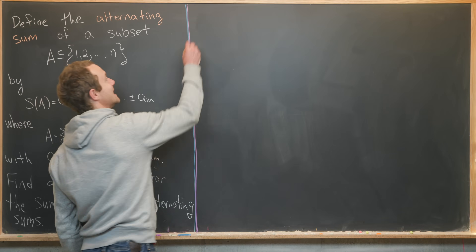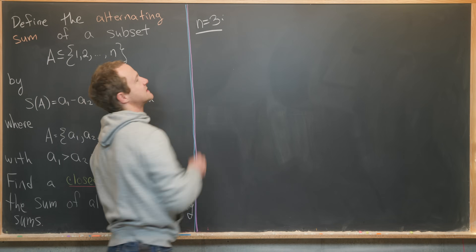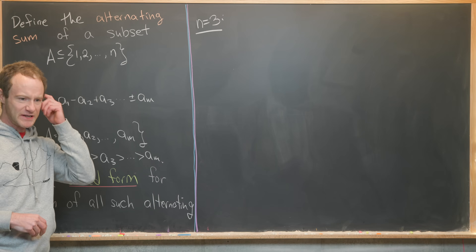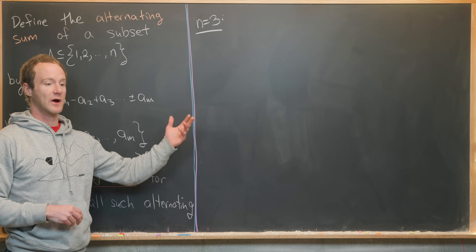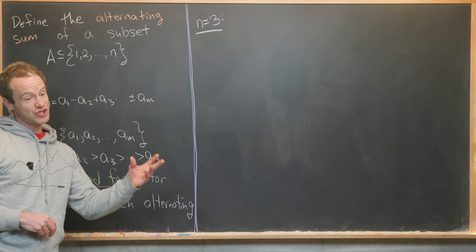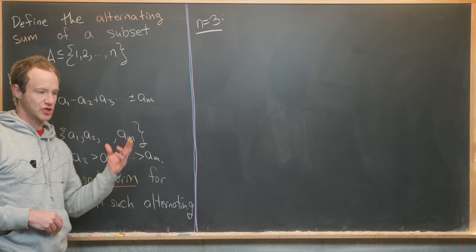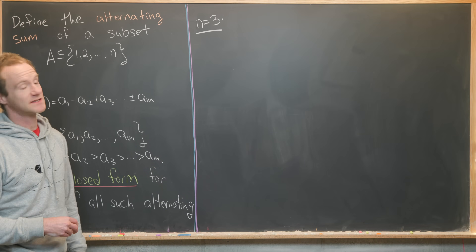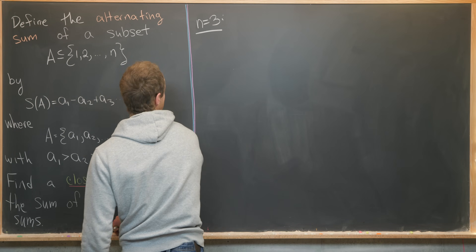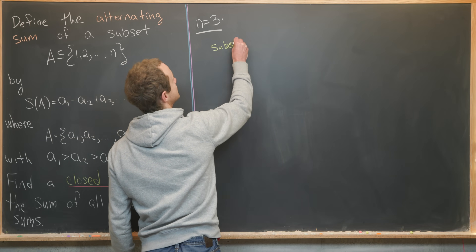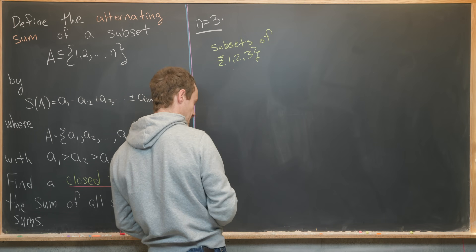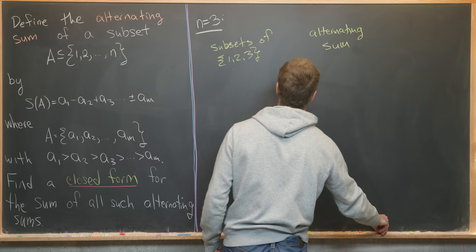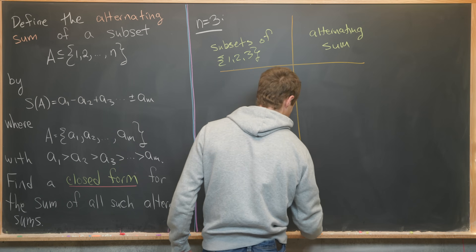To explore, I'm going to set N equal to 3. It's well known that the number of subsets of an N-element set is 2 to the N, so 3 is just right — we have 2³ or 8 subsets. That's just enough so that we can maybe see some structure, but not too many so that we have a lot of work to do. Let's look at all of the subsets of {1, 2, 3} and make a chart showing the alternating sum of each. There'll be 8 entries in this table.